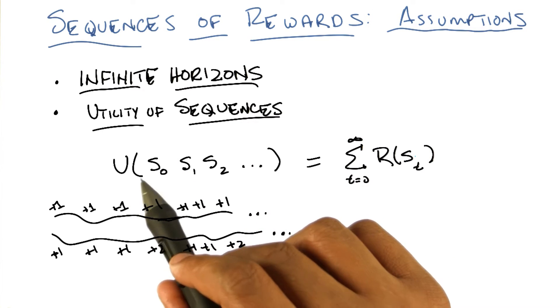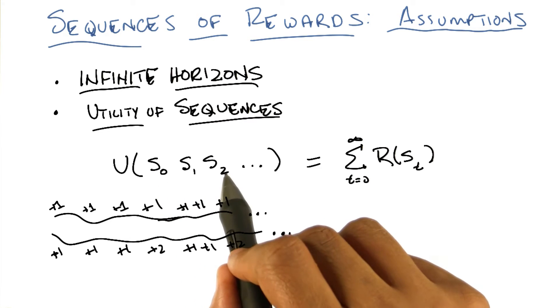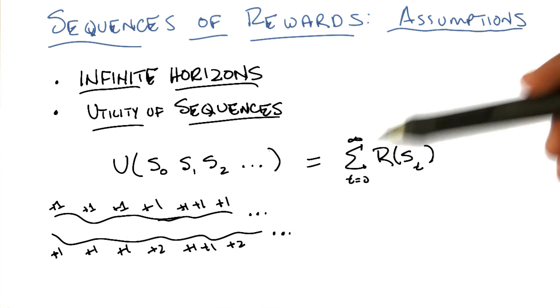I'm going to just say that the utility that we receive for visiting a sequence of states, s0, s1, s2, and so on, is simply the sum of all the rewards that we will receive for visiting those states. Sure. Does that make sense? Yeah.